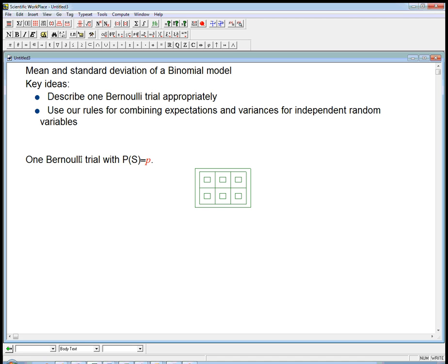So we've got one Bernoulli trial, and the probability of success is p, and the probability of failure is q, which is just a name for 1 minus p. It's just easier than writing 1 minus p all the time.